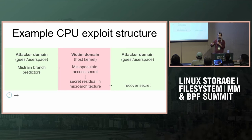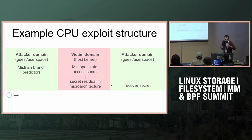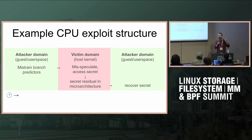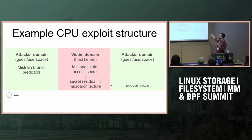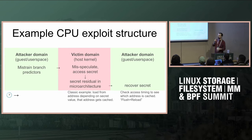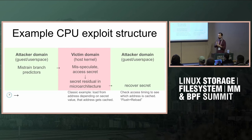Here's a simplified overview of how many of these exploits work. The attacker — which might be user space or a VM — does some magic instruction stream to set up the microarchitectural branch predictor state, then enters the kernel via a syscall or whatever. Because of the careful setup the attacker did, the CPU is going to misspeculate and access some secret data. The CPU figures out it was misspeculation and rolls back the instruction, but the data leaves residue in the microarchitecture. A classic example: the speculation loaded from an address that depended on a secret value — even though it's rolled back, the cache entry still remains. The attacker can use timing tricks to recover bits of the address loaded from, and from there infer bits of the secret.